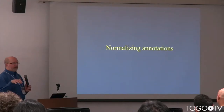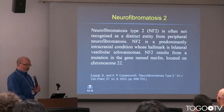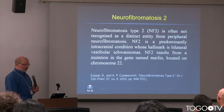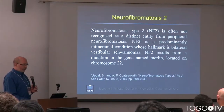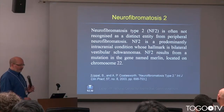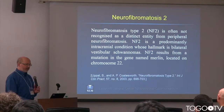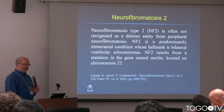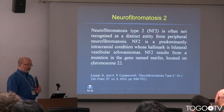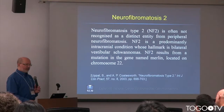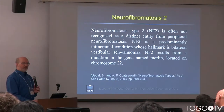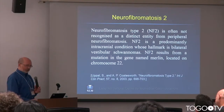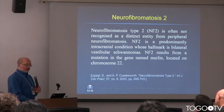I'm going to start with the basics — the part where we normalize annotations. This is something you're all used to. Here's a piece of an abstract from PubMed, an article about neurofibromatosis type 2. It says neurofibromatosis type 2 (NF2) is often not recognized as distinct from peripheral neurofibromatosis. NF2 is a predominantly intracranial condition; the hallmark is bilateral vestibular schwannomas.